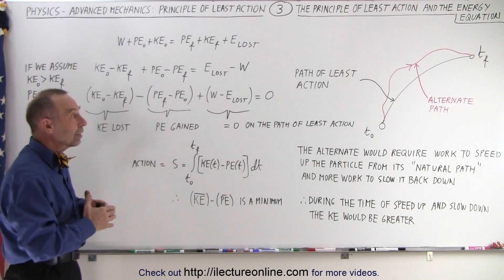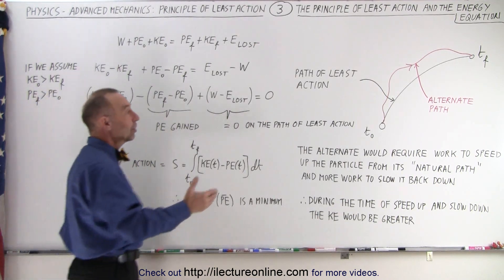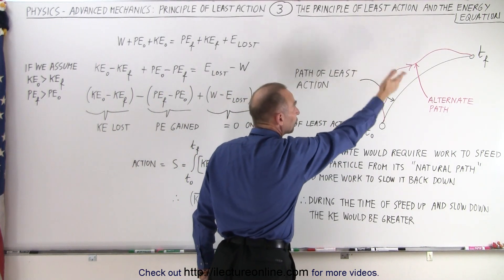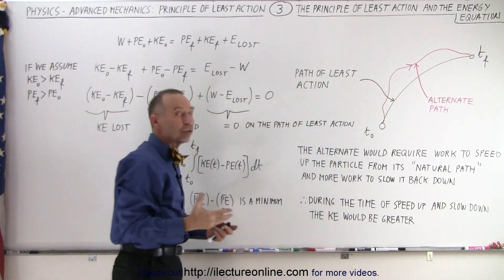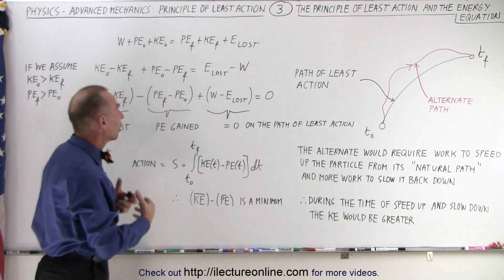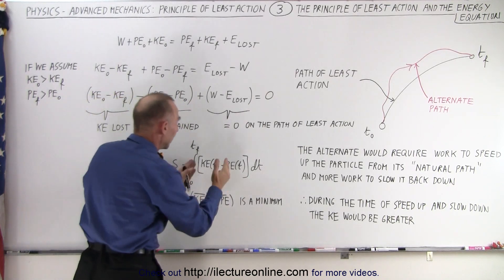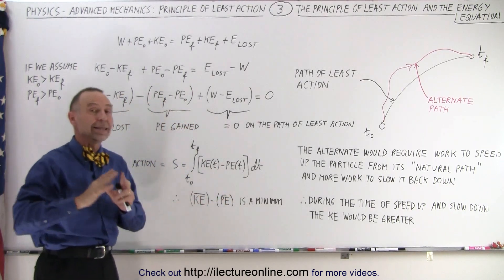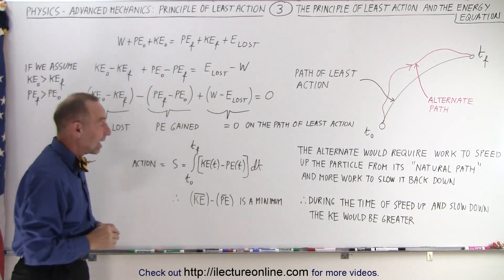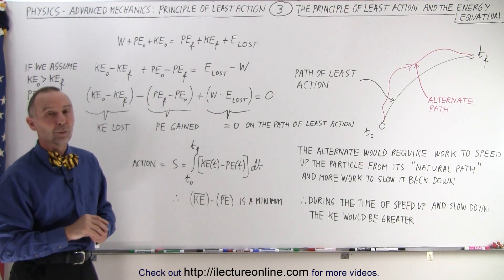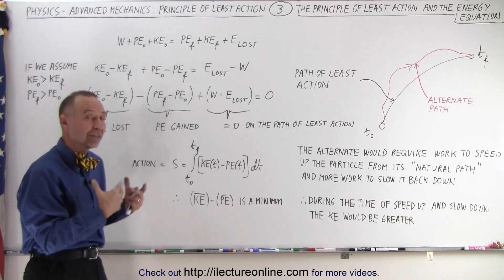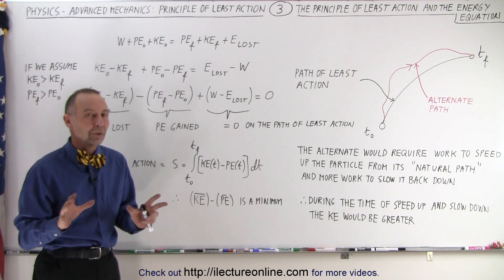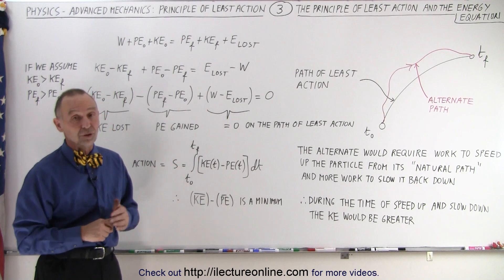Now you can see why the particle would not take any other path, because any other path would require additional work to speed it up and additional work to slow it down. The additional work would then result in a greater kinetic energy, a greater kinetic energy will result in a bigger difference between the two, and a bigger difference would mean not the path of least action — and therefore that's not the path the particle would take. That's the best way to think about it from a conceptual perspective, and I'll show you later on with some examples why that is actually so.